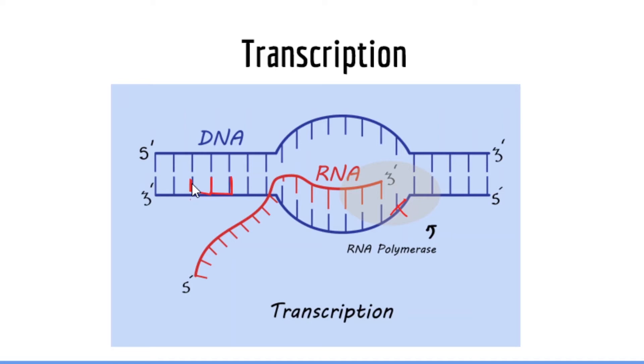There are transcription factors which control this entire process. Now, the way the transcription factors work is very complex and there are many different mechanisms. However, there are generally two different types of transcription factors. There are activators and repressors. Activators are transcription factors which increase transcription, while repressors are transcription factors which decrease transcription.